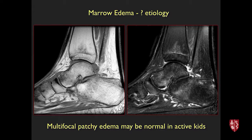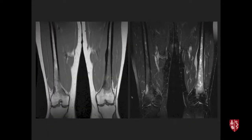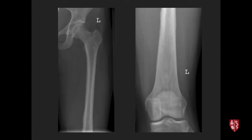A younger woman with femoral pain showed extensive low T1 and high T2 signal along the femoral diaphysis and metaphysis. The critical distinguishing feature was a lentiform density with cortical thickening — not just edema but a soft tissue mass. This was lymphoma: infiltrative lymphoma with a soft tissue component, not a stress injury.